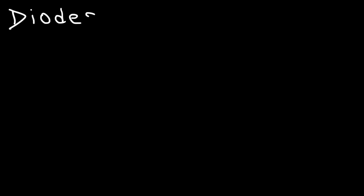In this video we're going to talk about something called diodes. So what exactly is a diode? A diode is a semiconductor device that allows current to flow in one direction.